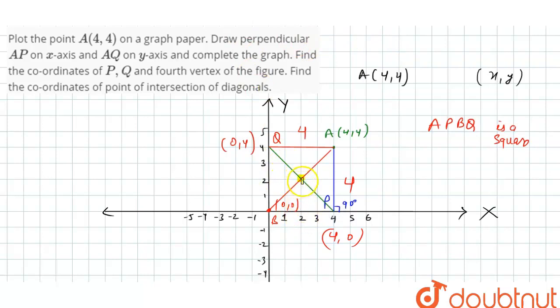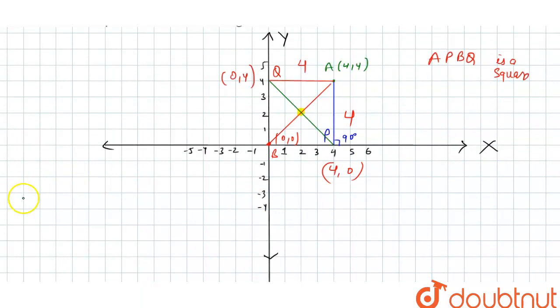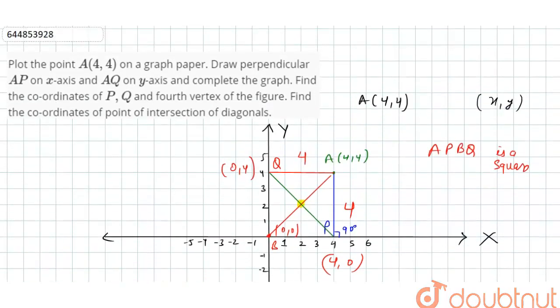So intersection of diagonals is equal to (2,2) and coordinate of vertex is equal to origin, origin is equal to (0,0). So this will be our answer, thank you.